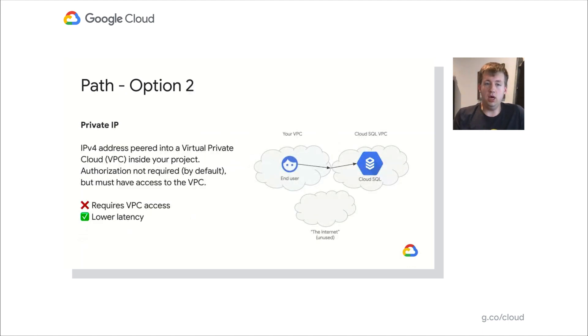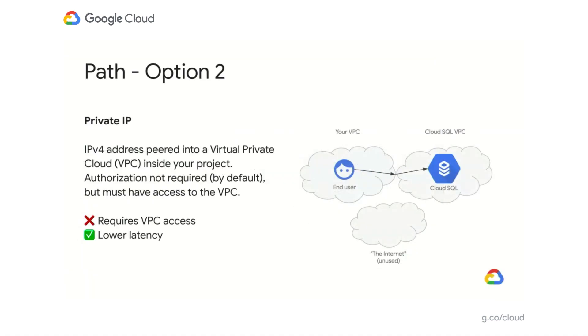The second option is to connect using private IP. Private IP is an IPv4 address that's peered into your project via a virtual private cloud, or VPC for short. By default, authorization is not required, but you do have to be on the VPC to access your Cloud SQL instance. One of the benefits of private IP is you usually have lower latency, because you're not connecting over the internet and instead connecting directly through an internal network.